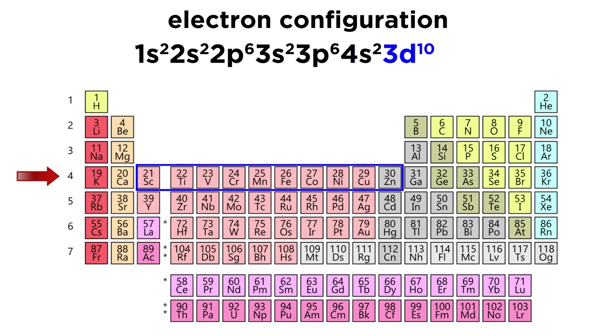Then we go through the d block, and remember that the d block is one behind the s and p blocks. So we have 3d10. And then to get to arsenic, we're moving through the p block. We have 4p3, because it's the third element through the p block. So that will be the ground state electron configuration for arsenic.